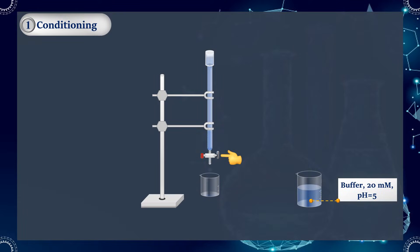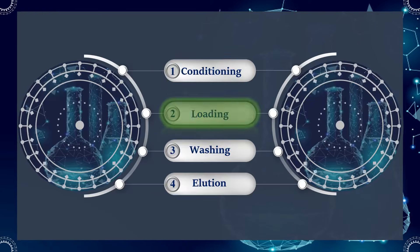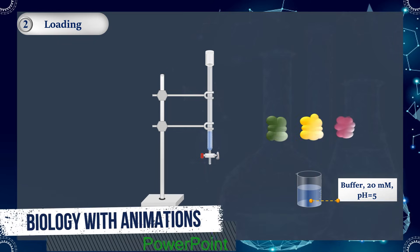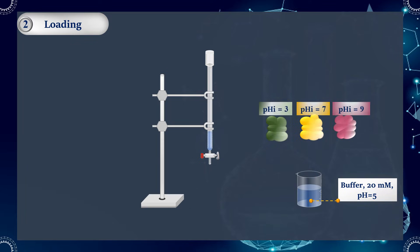When the column is equilibrated, the second step is sample application. Depending on the pH of their environment, proteins may carry a net positive charge, a net negative charge, or no charge. This net charge can be determined by comparing the pHi of each protein with the pH of the buffer.